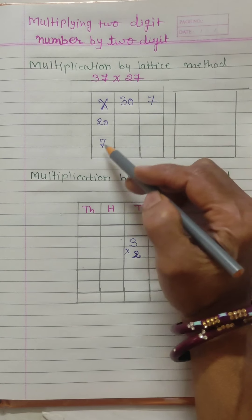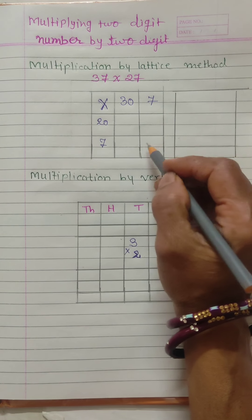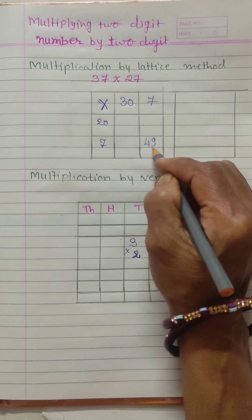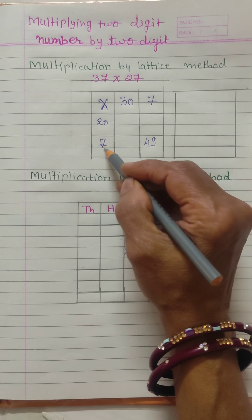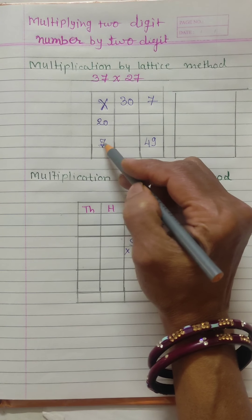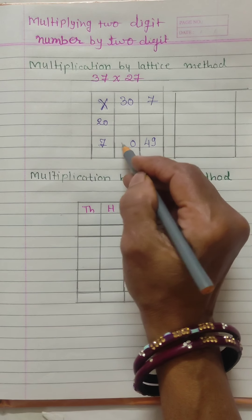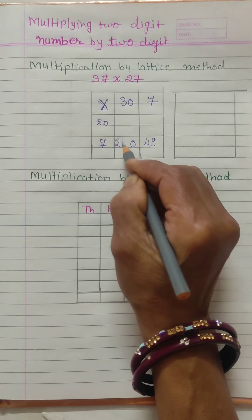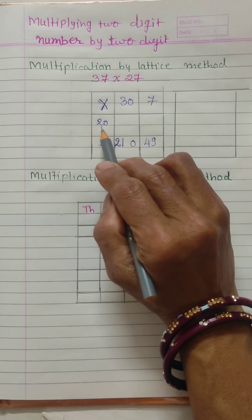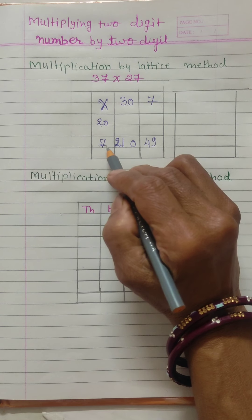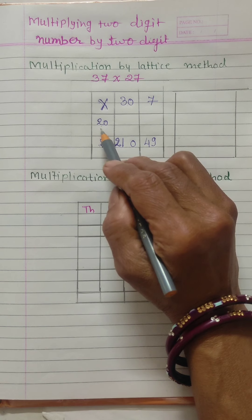From 7 we will multiply this 7. 7 sevens are 49. We will write here 49. Then we will multiply this 30 by 7. 7 times 0 is 0, and 7 threes are 21. Now we will start our multiplication by 20 — the units place multiplication is finished. Now we will start by tens.